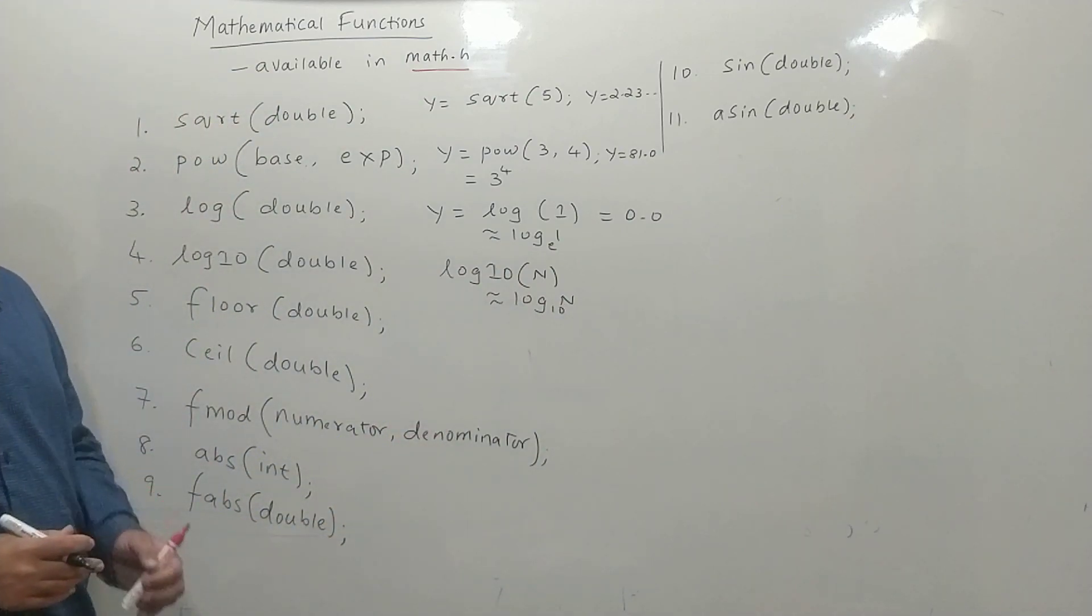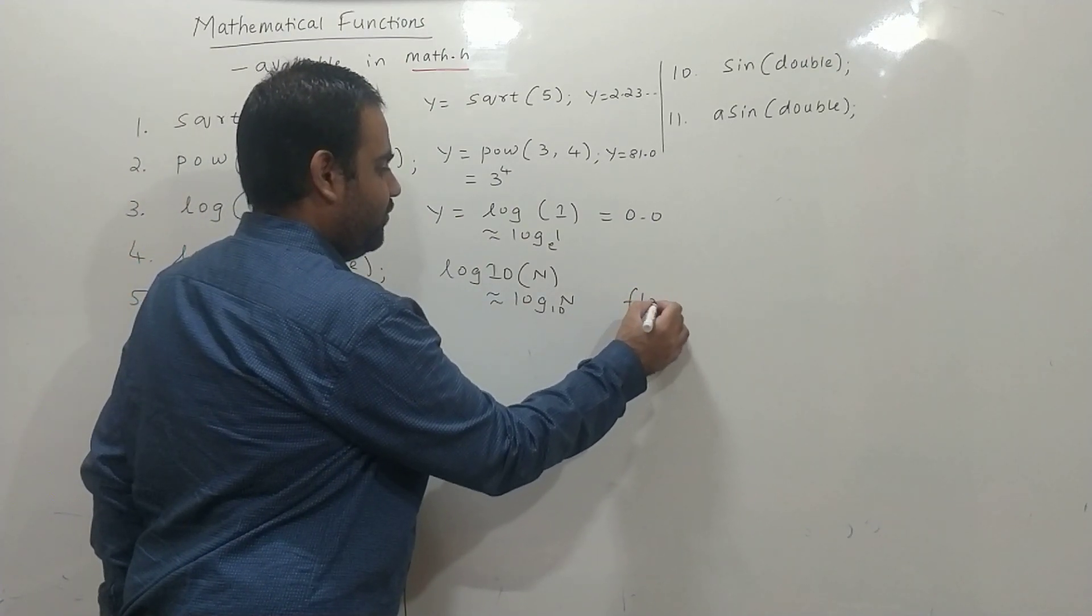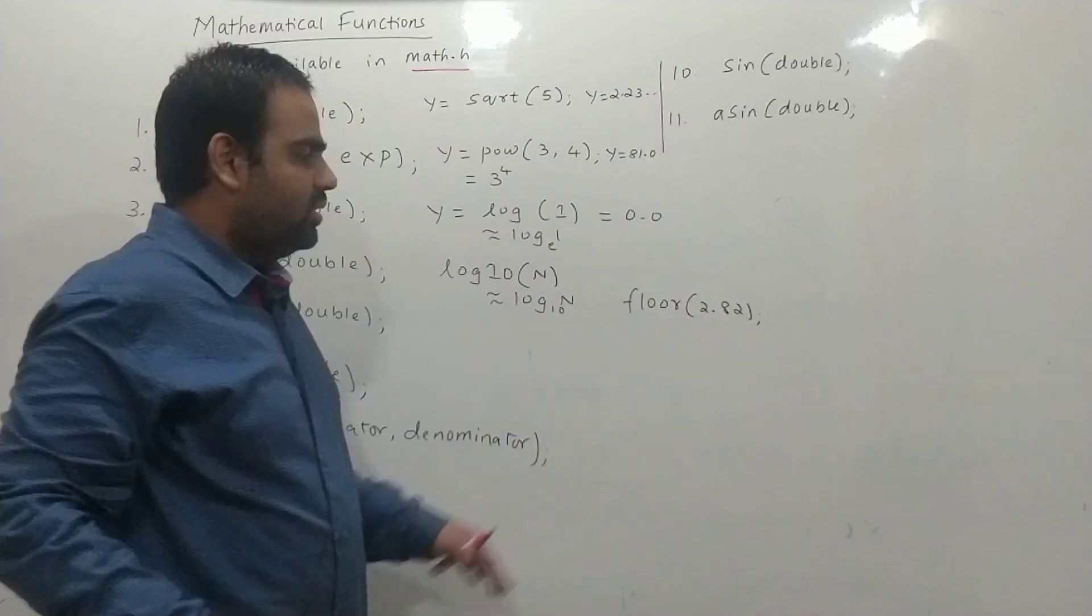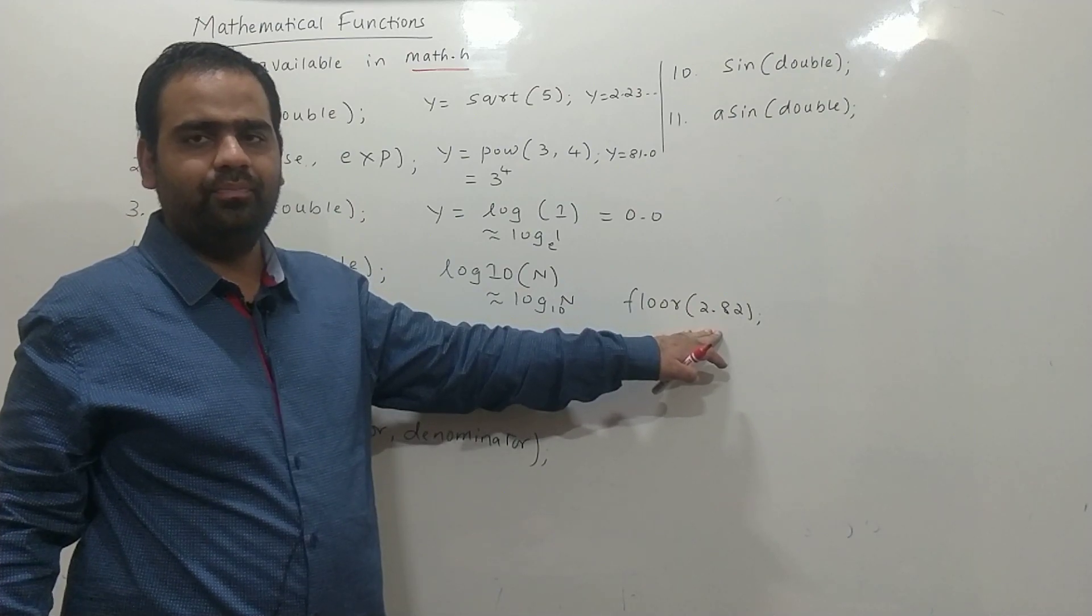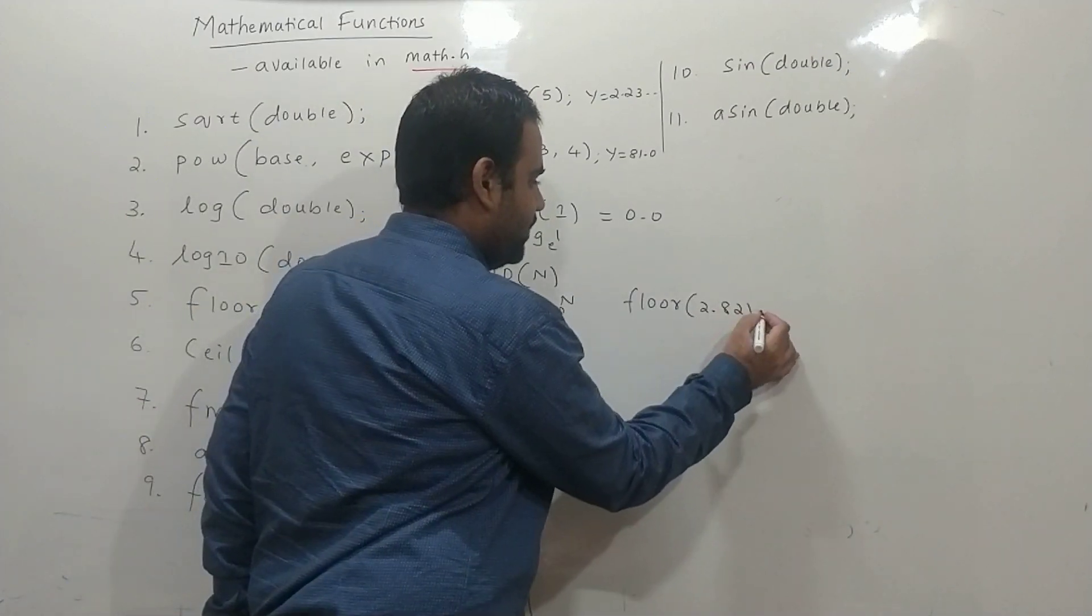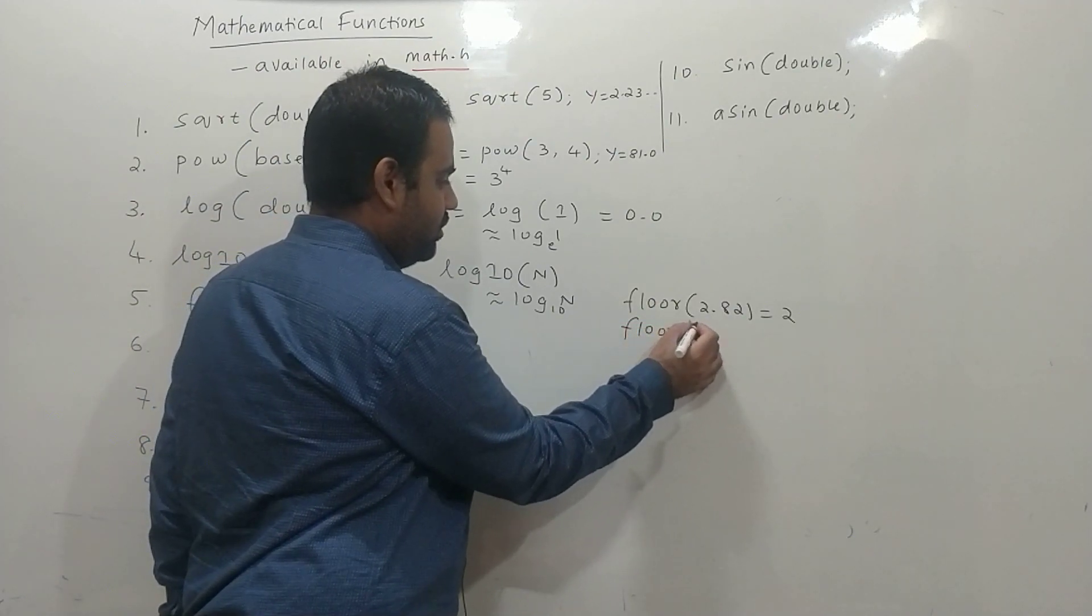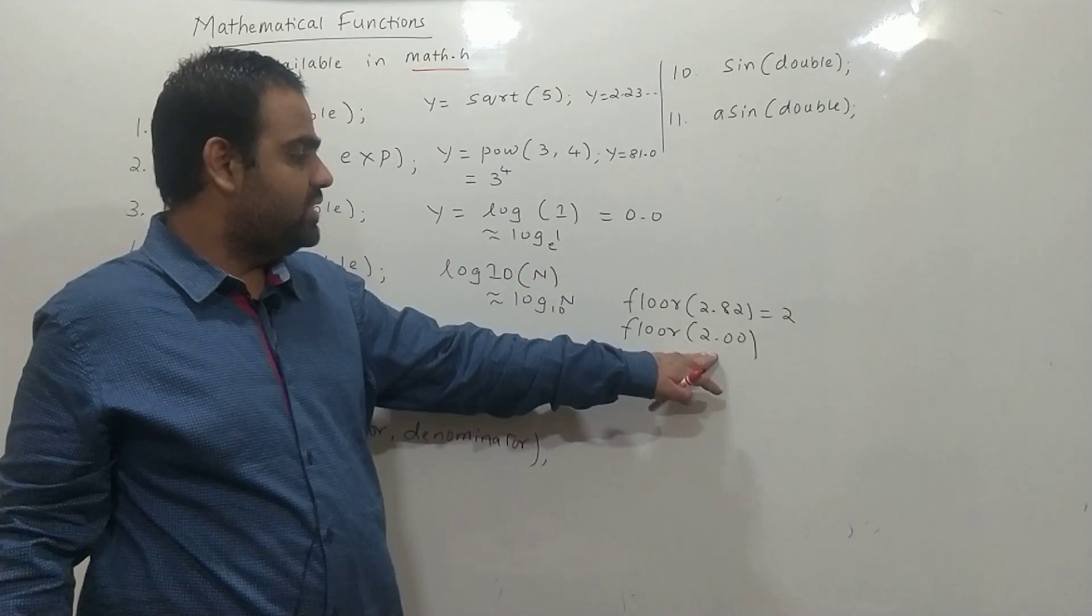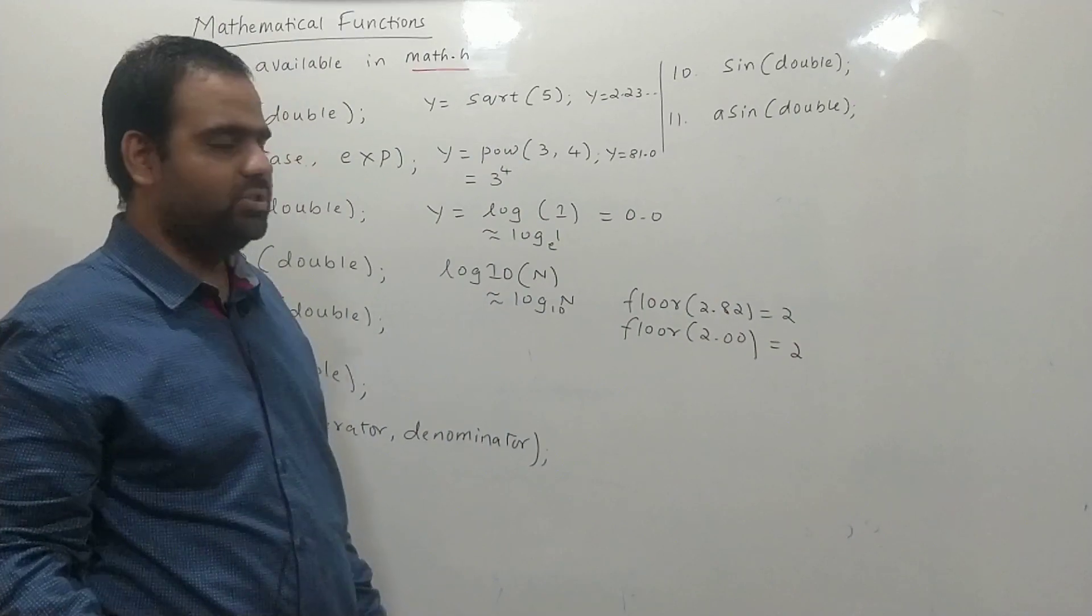The next is floor. What is floor? If we write floor of 2.82, we need to find an integer which is less than or equal to 2.82. The nearest integer less than or equal to 2.82 is 2. Therefore, it will give answer as 2. If we write floor of 2.00, the nearest integer less than or equal to 2.00 is 2. Hence, floor of 2.00 is 2.